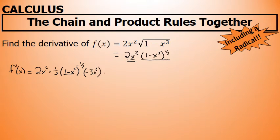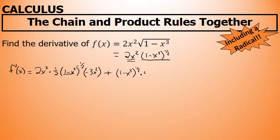That is multiplied by the derivative of (1 minus x³), which is negative 3x². Then we add the second factor unchanged — (1 minus x³)^(1/2) — times the derivative of the first factor, 2x², which is 4x.